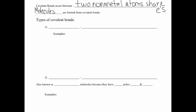The first type of covalent bond we're going to talk about is called non-polar. It's called non-polar because there's no polarity to the bond, and that might make a little more sense once we start drawing what that looks like. Non-polar molecules are the result of equal sharing of electrons, and it's equal sharing because the two atoms have the same electronegativity.